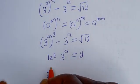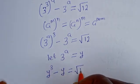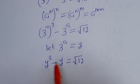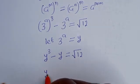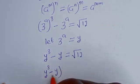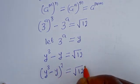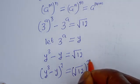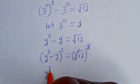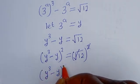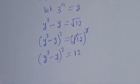At this point, let 3 to the power of a equal y. Then we have y to the power of 3 minus y is equal to the square root of 12. Let's square both sides of this equation in order to remove the square root. We have y to the power of 3 minus y, all squared, is equal to 12.